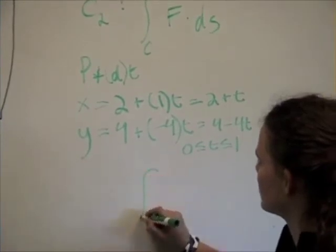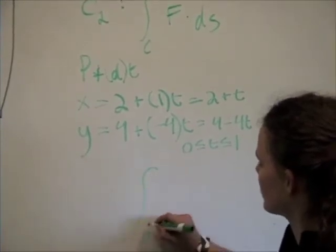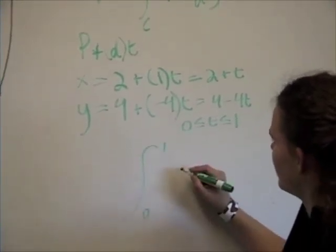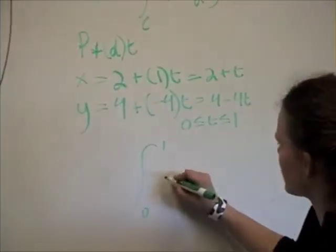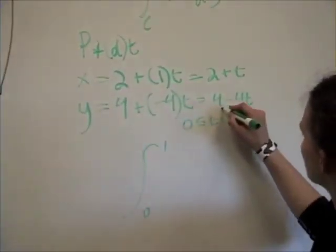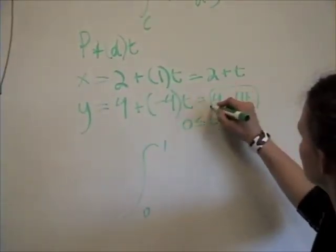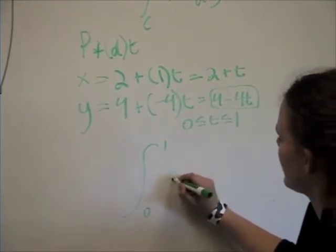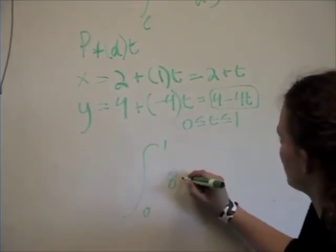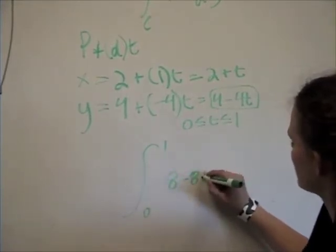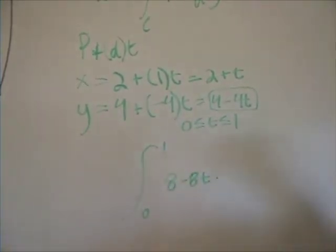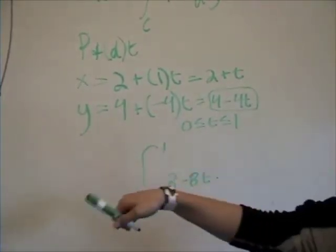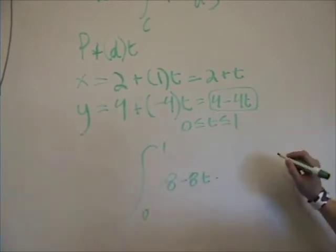Our integral is going to go from zero to one, and the integrand is 2y, so we substitute to get 8 minus 8t. We then multiply that by the magnitude of our velocity vector, just as we did in the first integral.